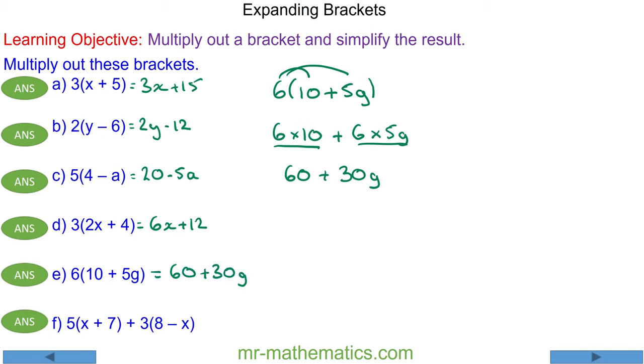For question F we are going to work out each bracket in turn and then we will add or collect the like terms together. We have 5 lots of x plus 7 plus 3 lots of 8 minus x. So we have 5 times x plus 5 times 7 plus 3 times 8, and then we have 3 times negative x which is negative 3x.